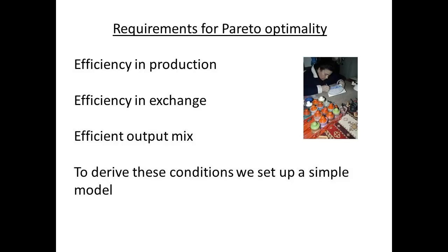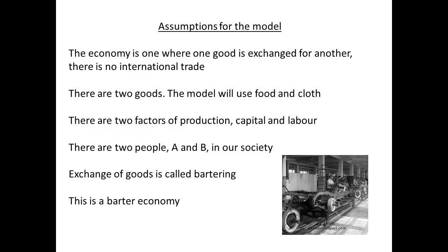We are now going to set up a model to examine these. The model is going to be based on a number of assumptions. There are two goods — we shall use cloth and food. There are two factors of production, capital and labour. There are only going to be two people in our society. We shall call them person A and person B.